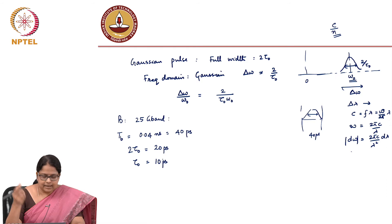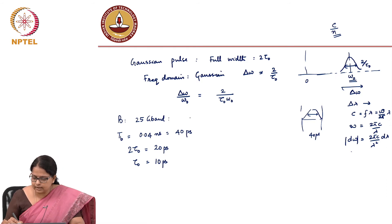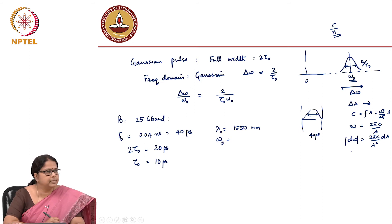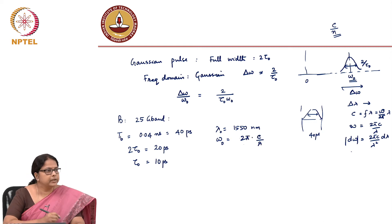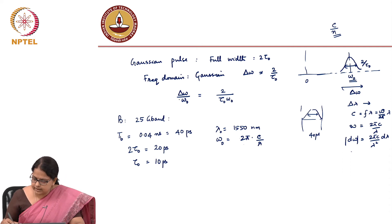For this case, let us calculate what this, and let us say your lambda is equal to 1550 nanometer. What is the corresponding frequency? Of course, you can calculate free space lambda naught, omega naught free space frequencies, 2 pi into C by lambda. And what is that number? I want to calculate this number, delta omega divided by omega naught.